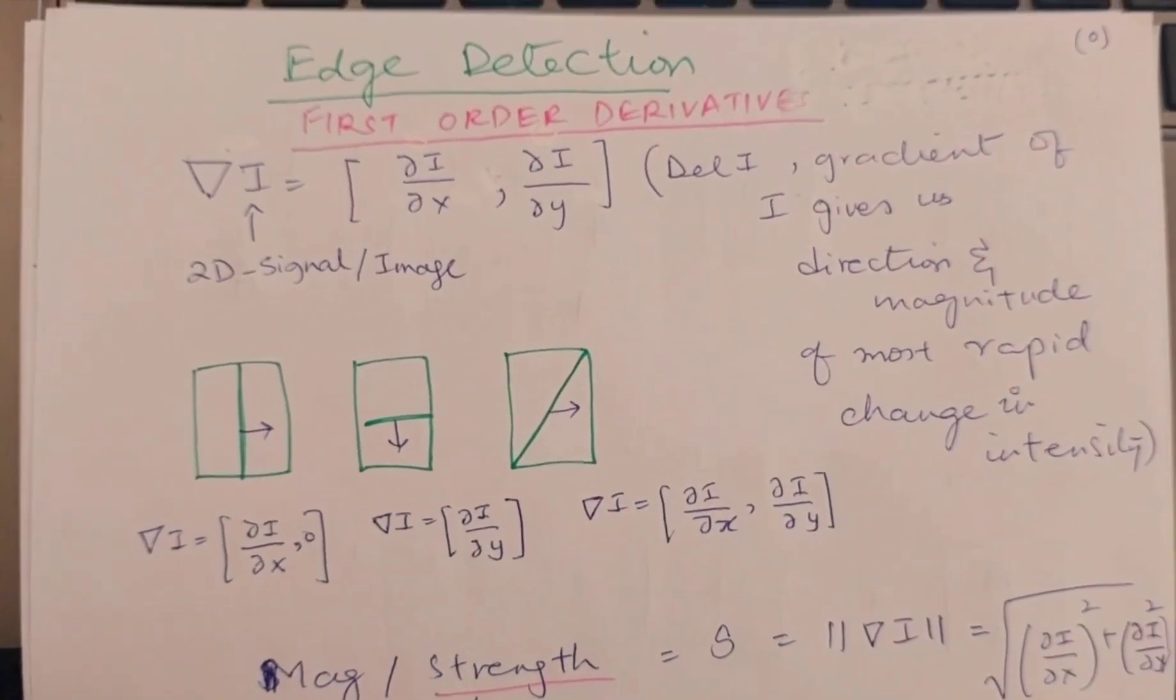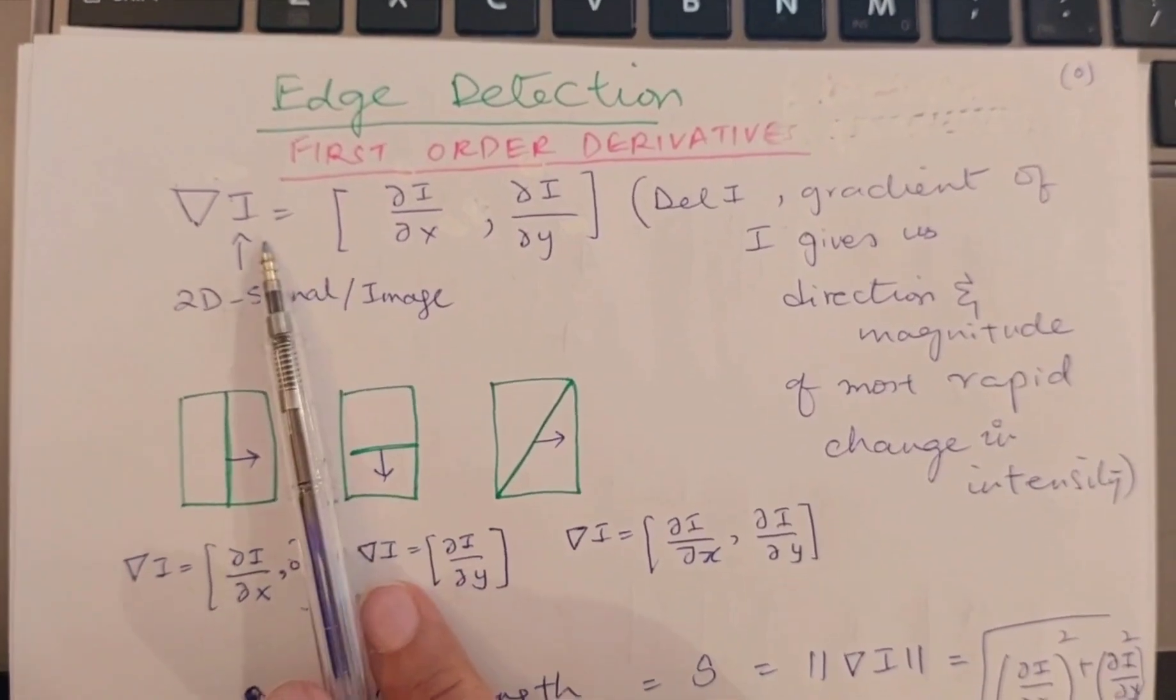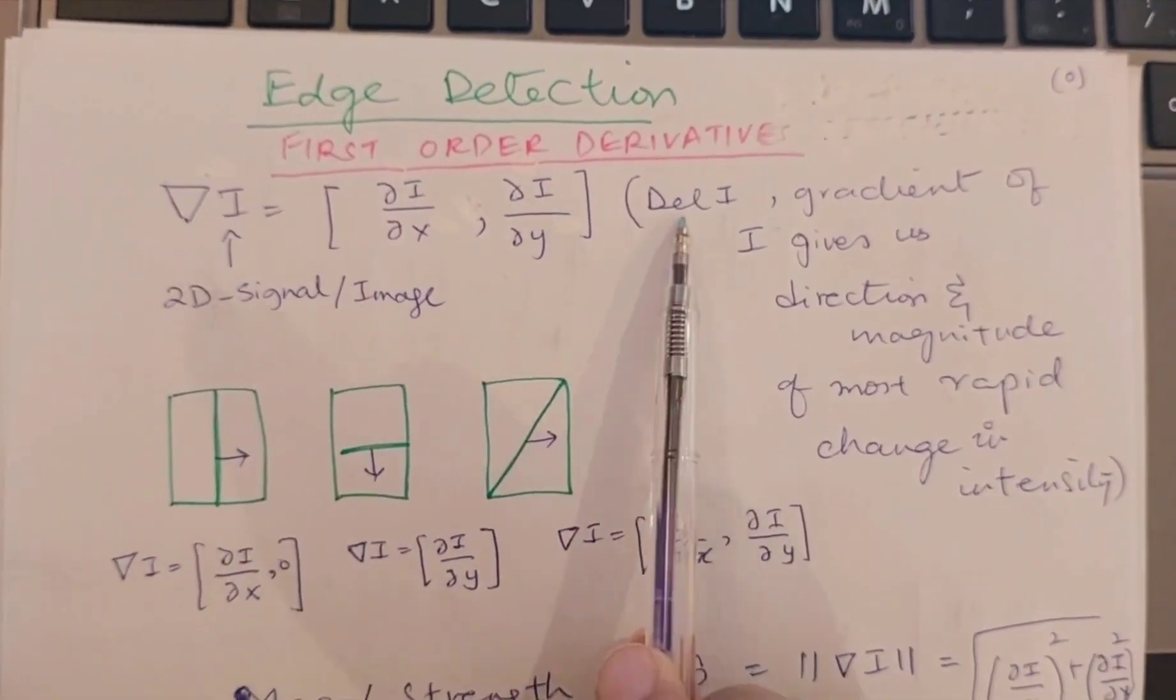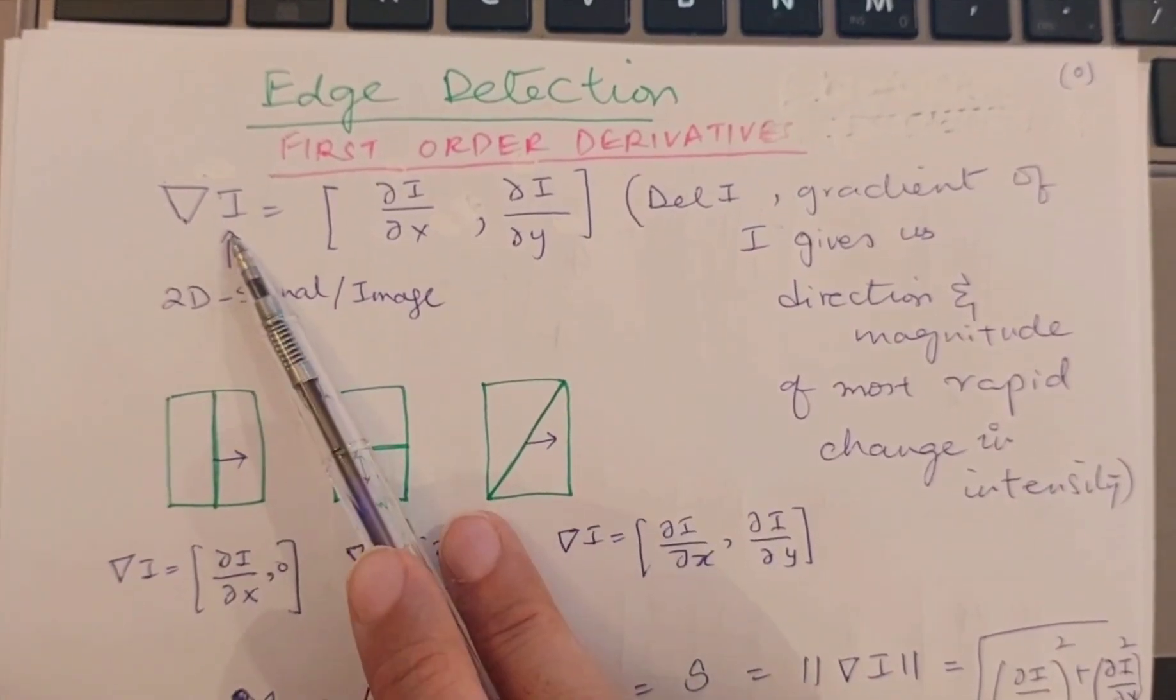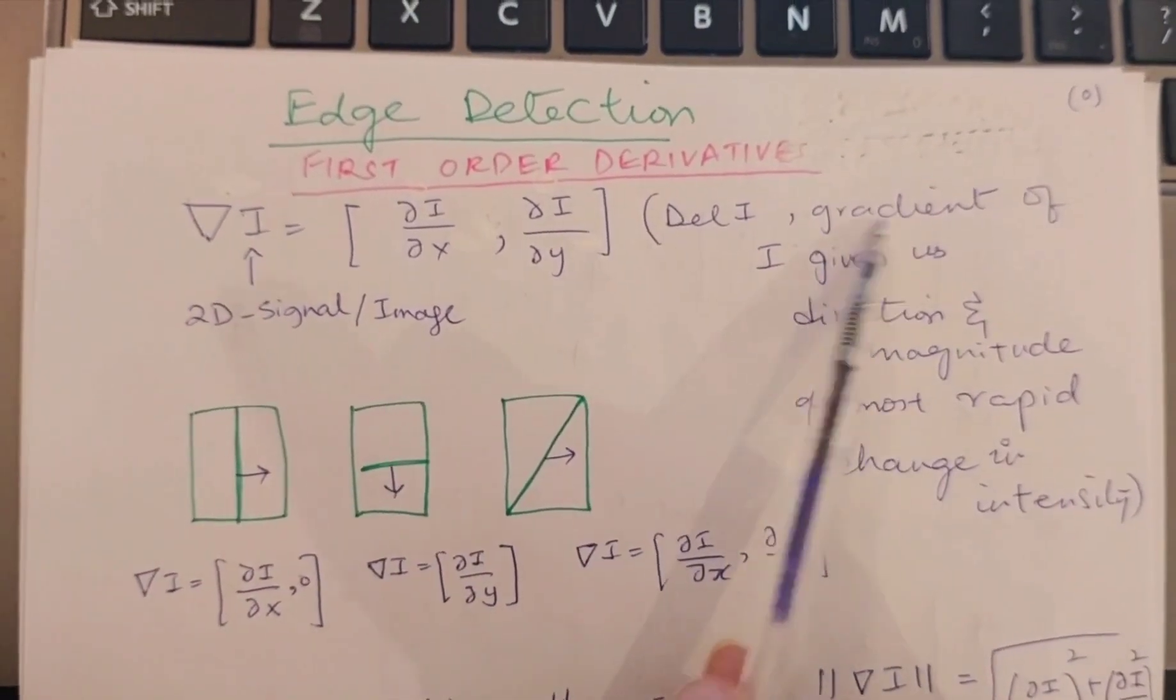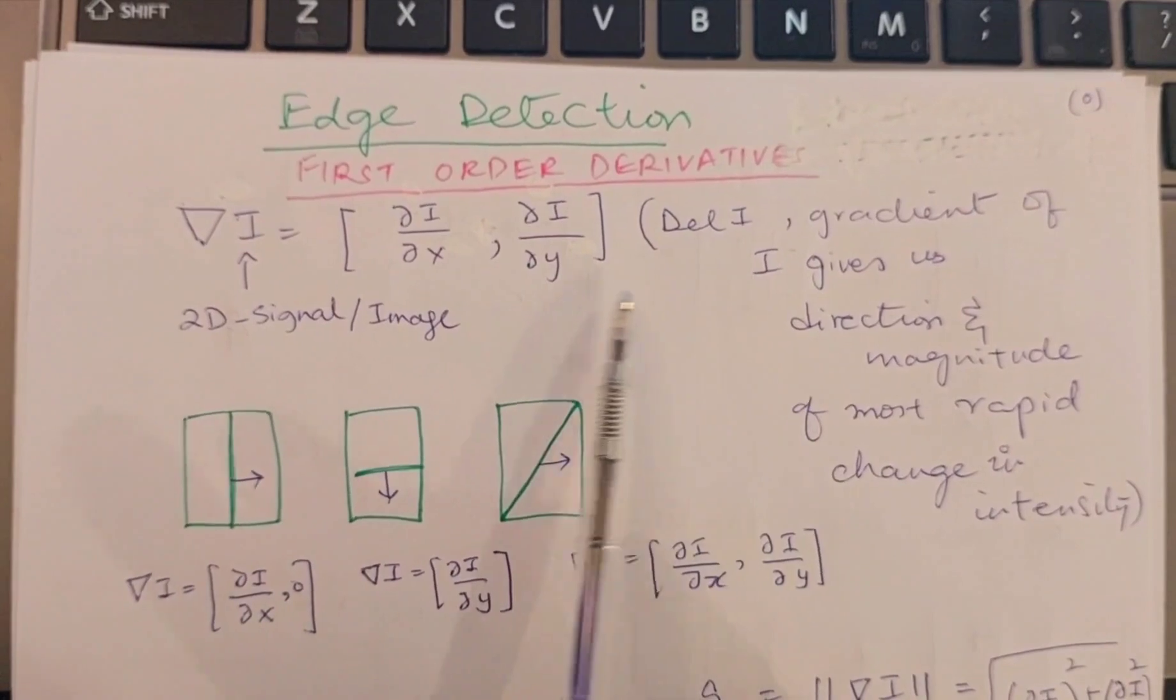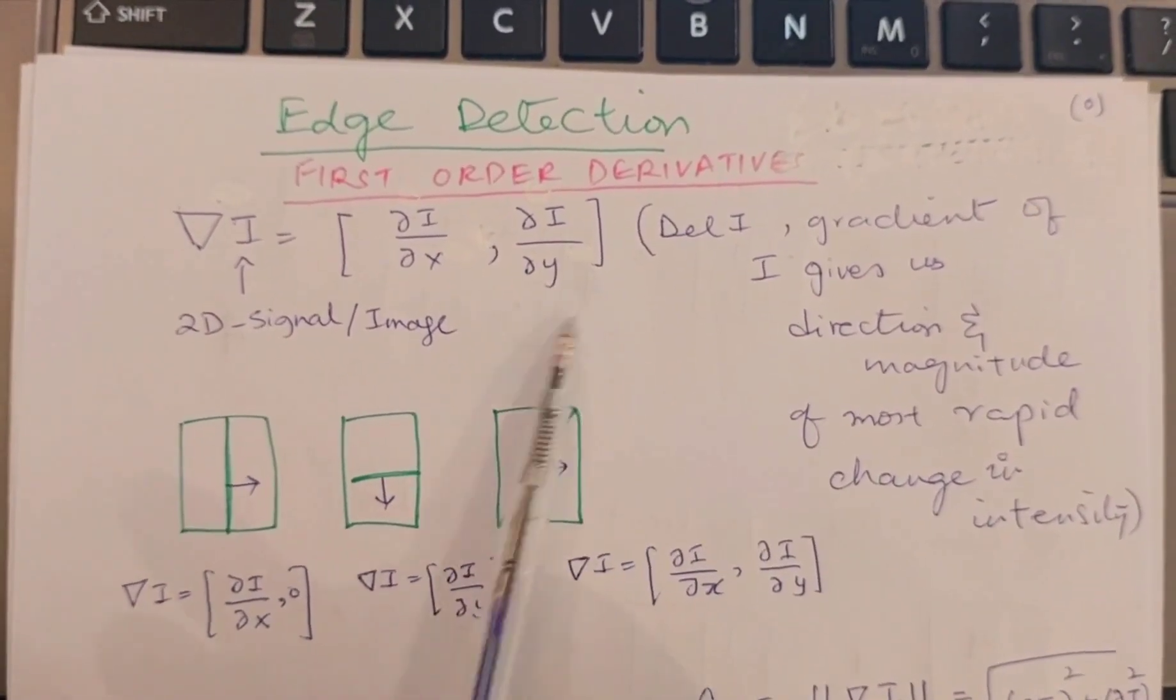If I'm using this first order derivative, this operator is actually called the del operator, and I will read it as del of I. It gives me the gradient of I. What do I mean by gradient? Actually, whenever I have a 2D signal or an image, which is basically a two-dimensional image, then I get a gradient.